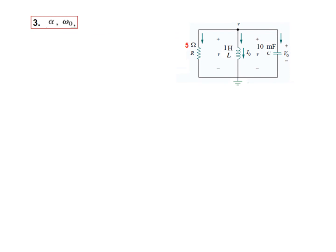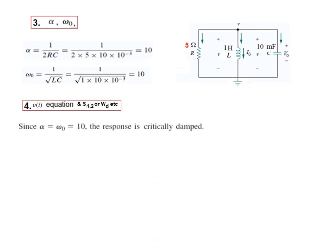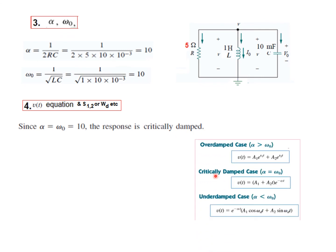Step 3: find alpha and omega. Alpha is now 10 — in the previous example it was 26. Omega-zero is still 10, so now alpha equals omega. Since alpha equals omega-zero (both equal 10), this is the critically damped case, and we pick the corresponding equation.